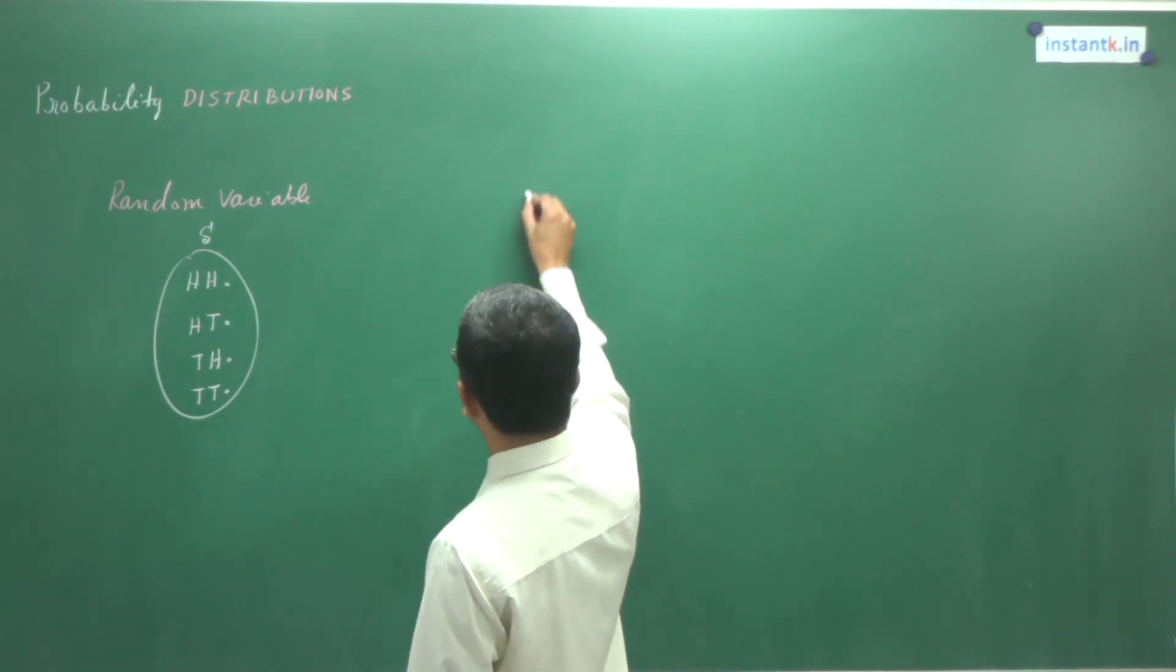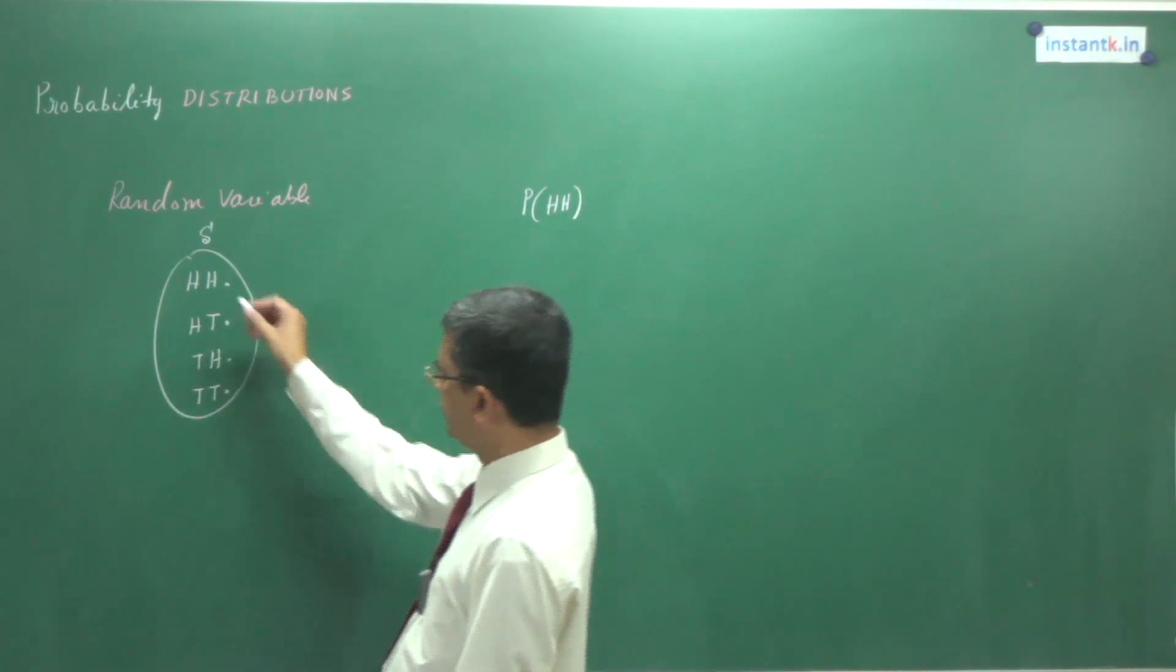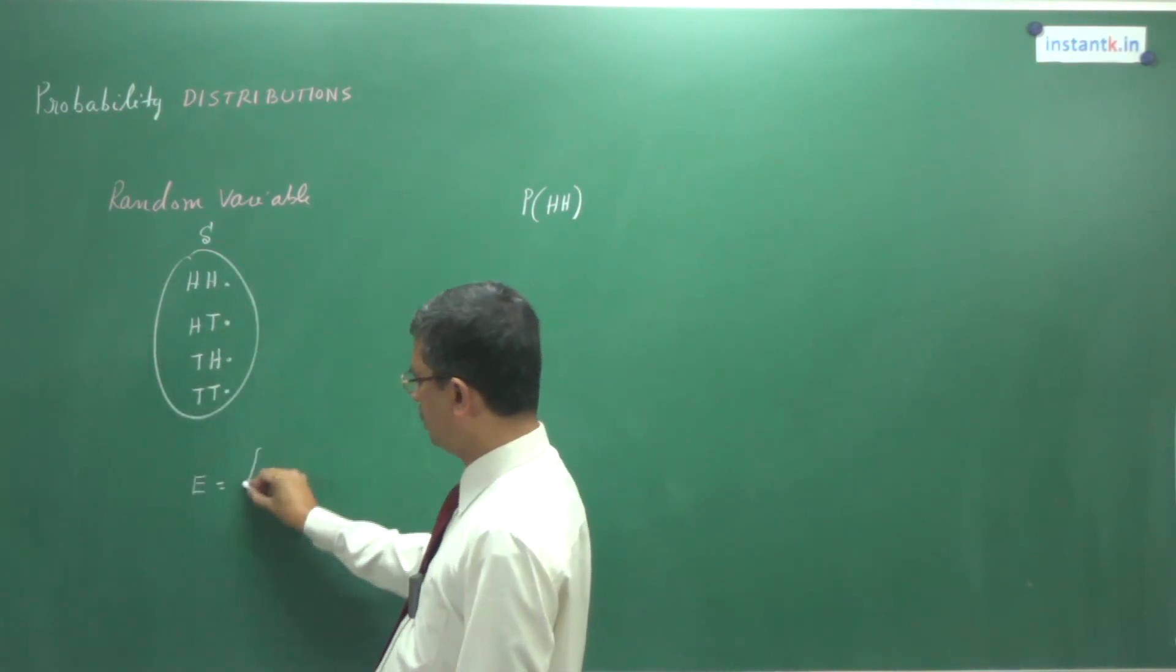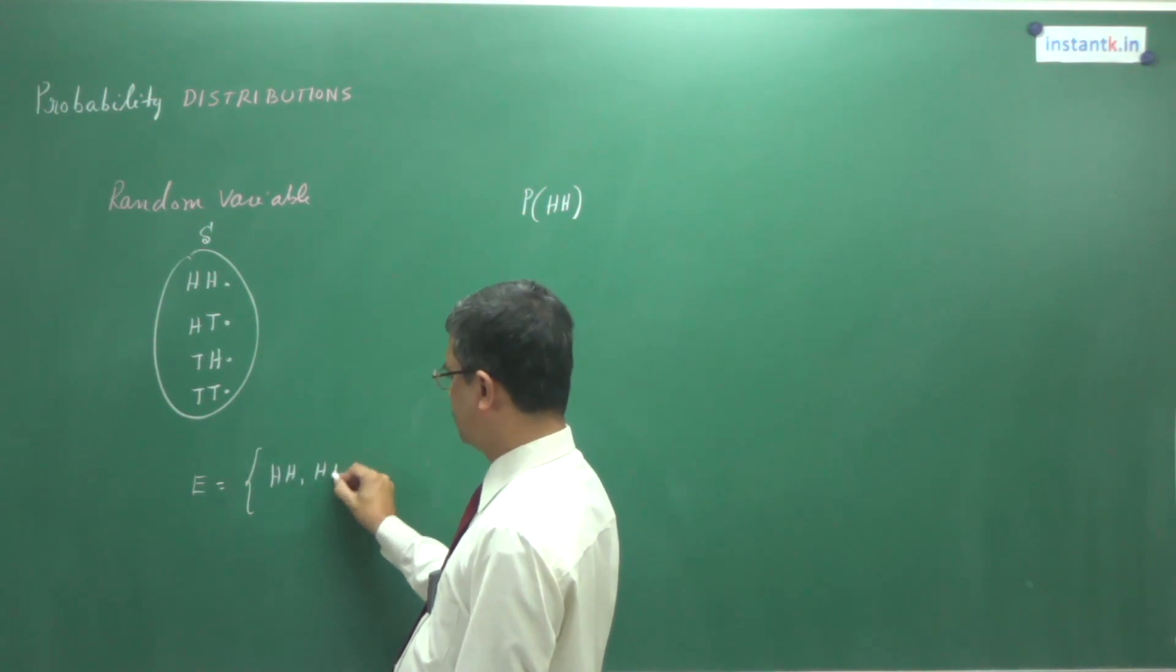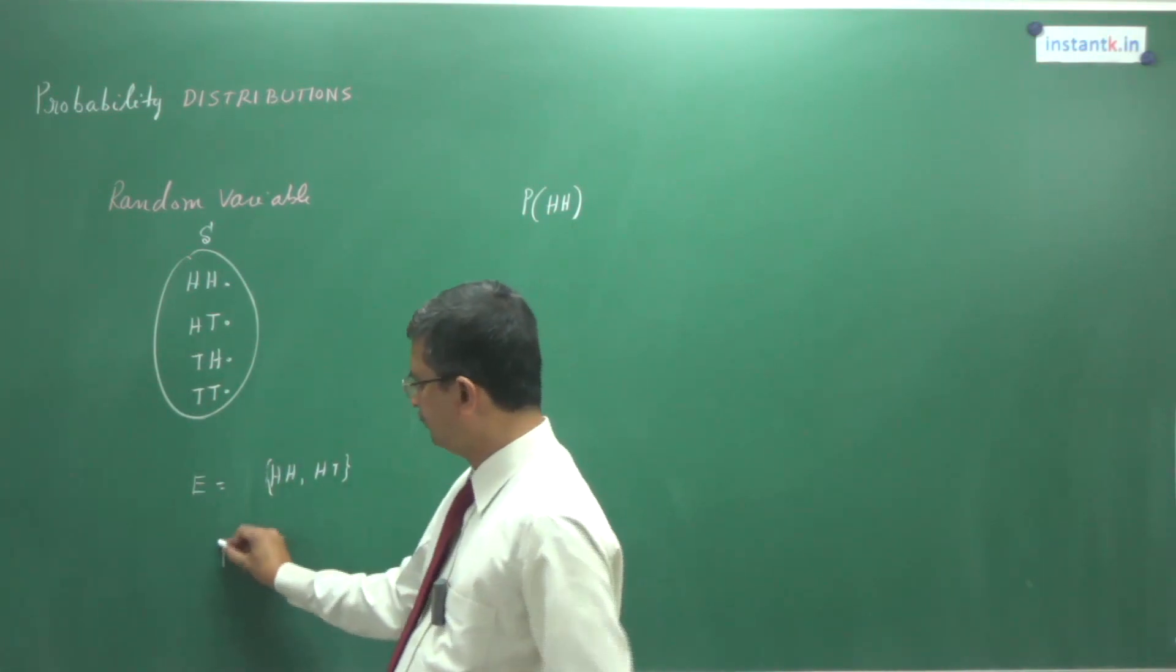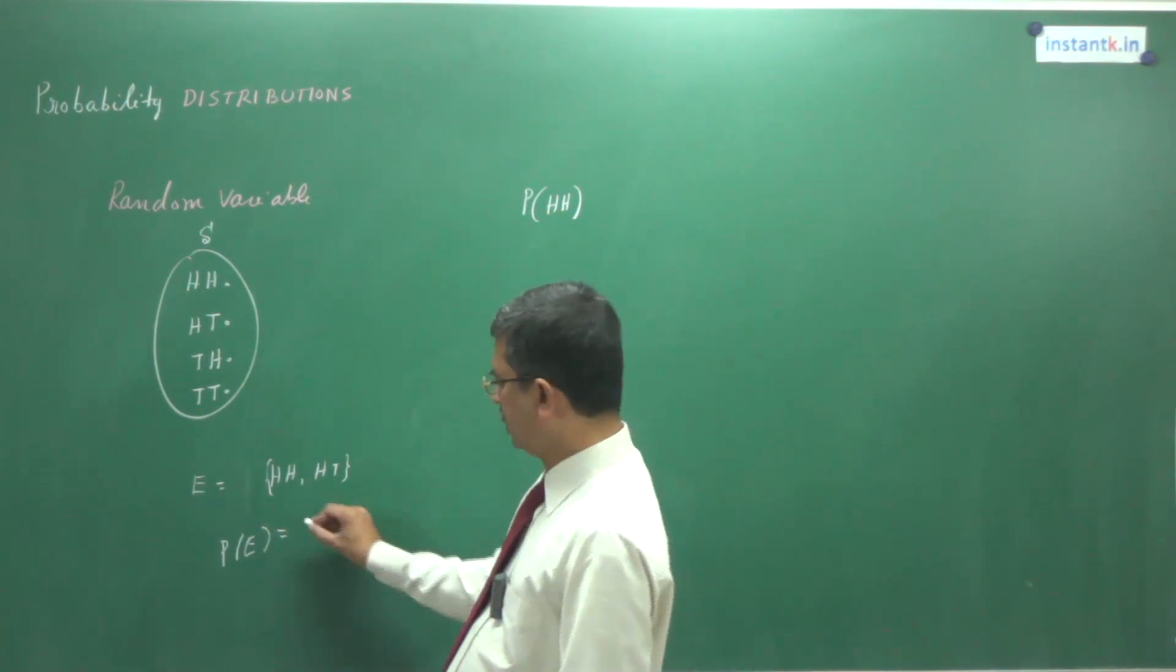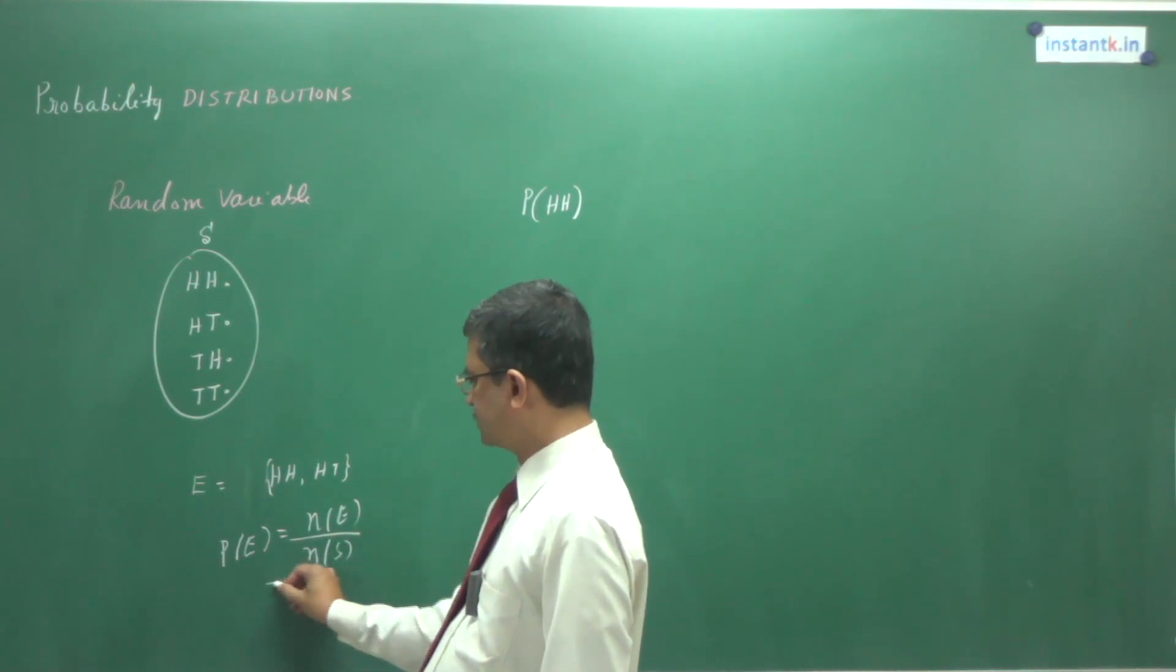We have calculated what is the probability of getting head-head. We have taken an event. What is an event? An event is a subset of this. What are the possible subsets? I can take HH and HT. This is one subset. What is the probability of E? This is nothing but the number of elements in E divided by the number of elements in S.